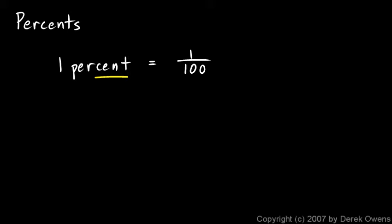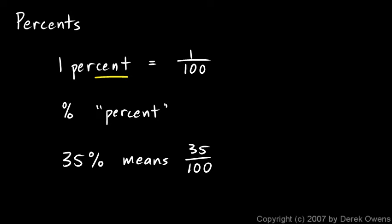The symbol for percentages is this little symbol here, which shows up on a typewriter. It's usually over the 5 key—hit shift 5—and that just means percent. So if you see something written like 35%, that just means 35 hundredths. So 35% of something is 35 hundredths of that thing.